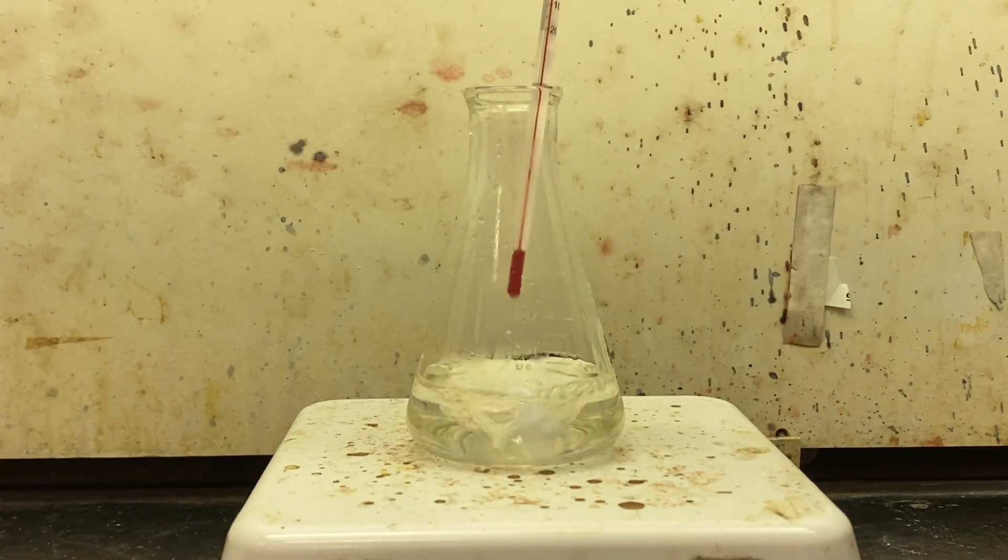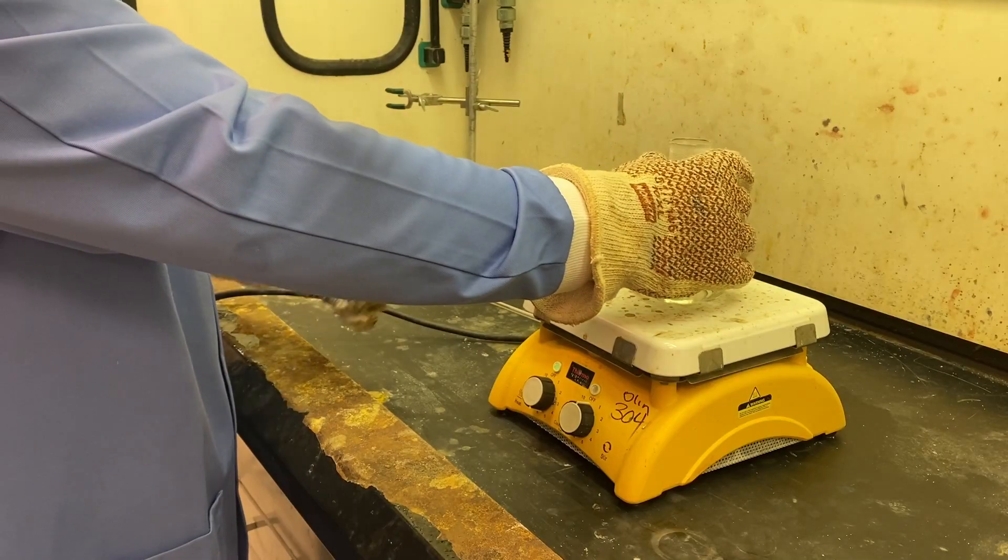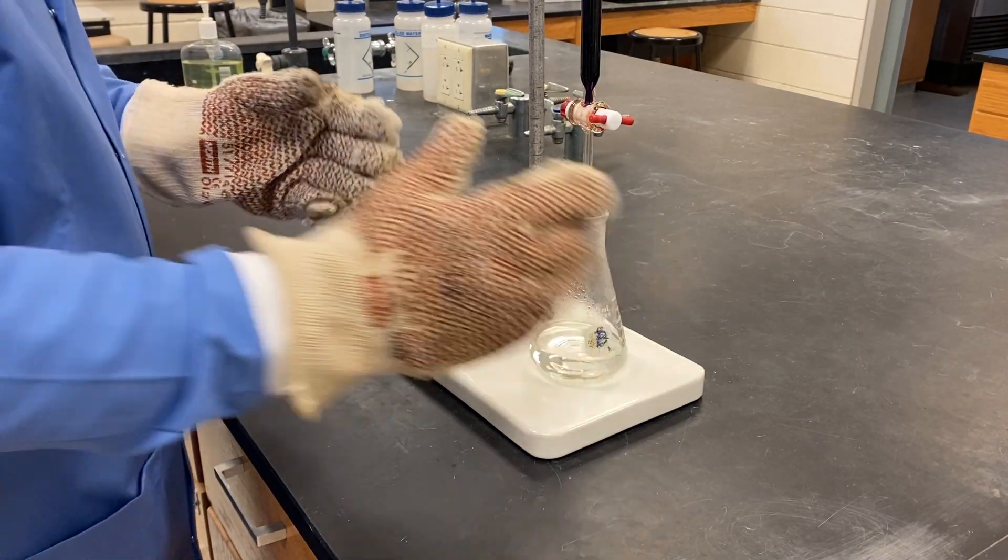Before starting the titration, the solution must be heated to 85 degrees Celsius in a fume hood. When moving the hot solution from the fume hood to your titration setup, you must use a pair of hot gloves.